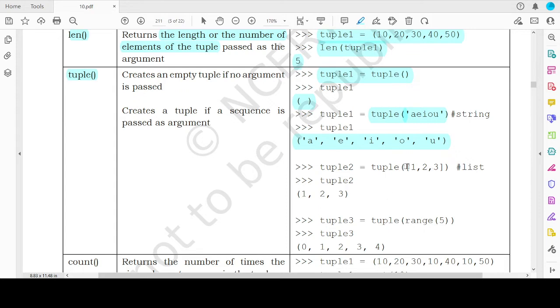Now similarly, instead of a string, you can pass a list. List is also a sequence data type. So each element of this list that is 1, 2, 3 becomes an element of the new tuple named tuple2.